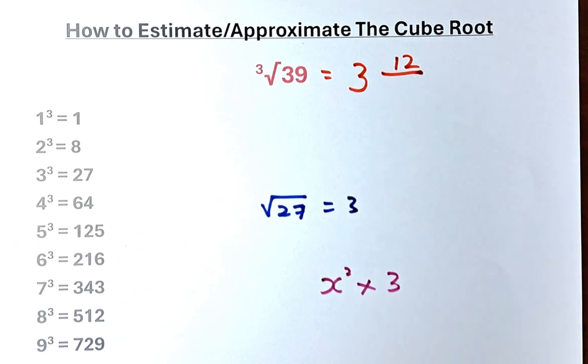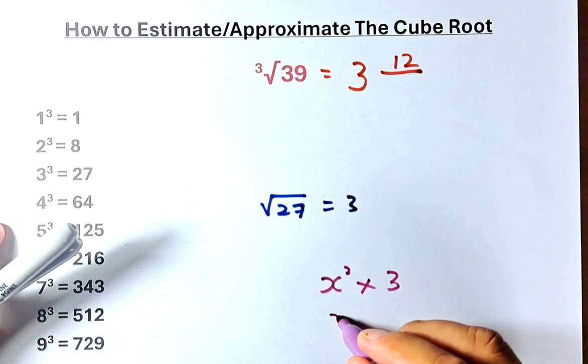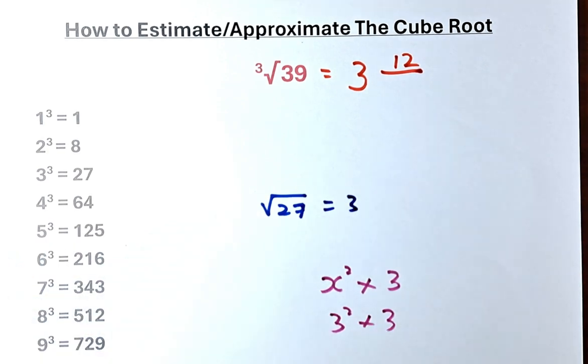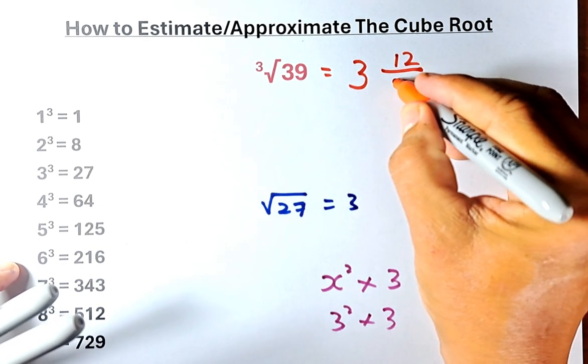So your x is 3. So 3 squared times 3. So 3 squared is 9. 9 times 3 is going to be 27 and we are going to put the denominator as 27.